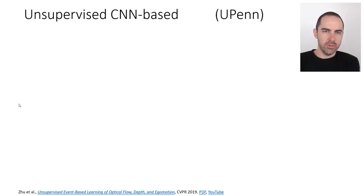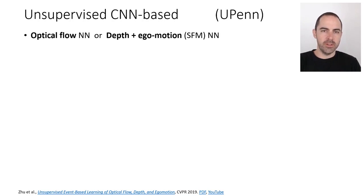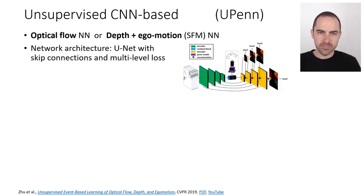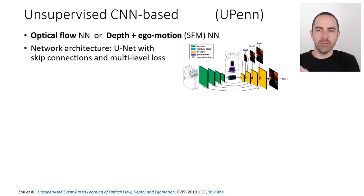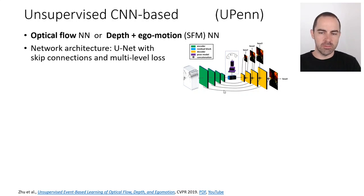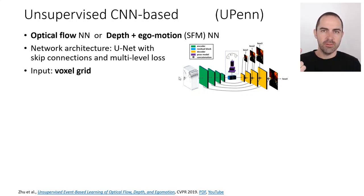Another network came out around the same time for unsupervised optical flow and depth estimation — essentially two networks: one for optical flow and another for structure-from-motion. It follows a similar principle to EV-FlowNet by the same author, using a U-Net architecture with encoder, decoder, and skip connections. The input has changed: instead of four channels (positive/negative event counts and time surfaces), it now uses a voxel grid, which better preserves the temporal characteristics of the events.